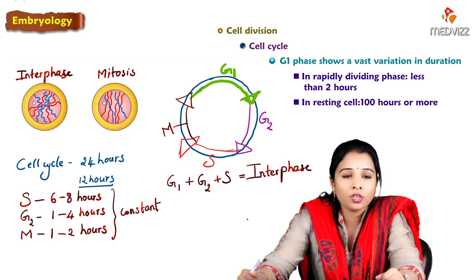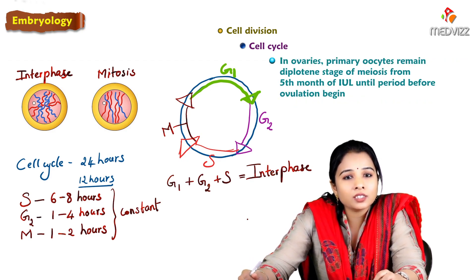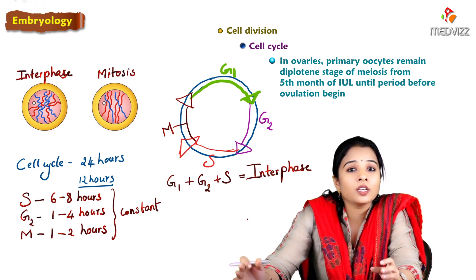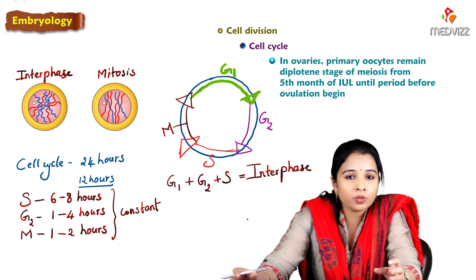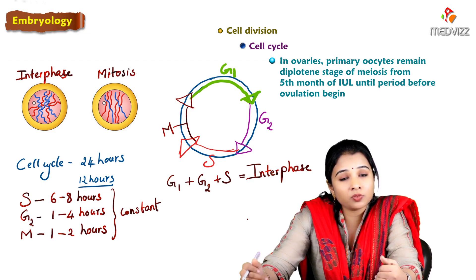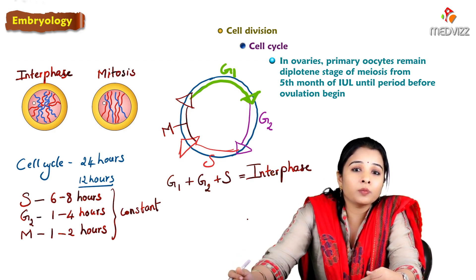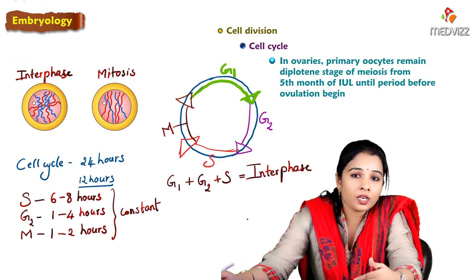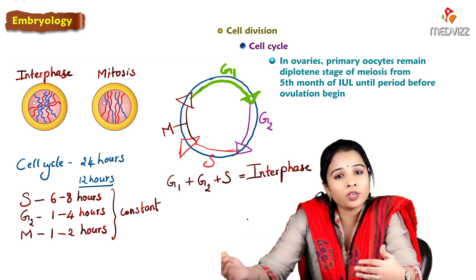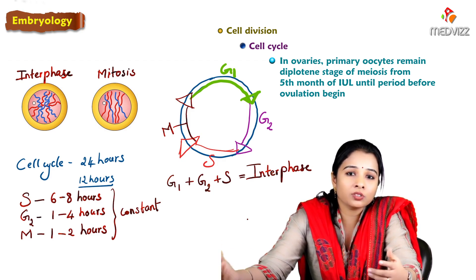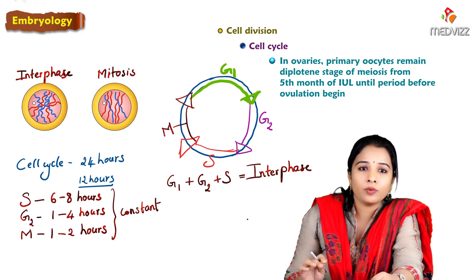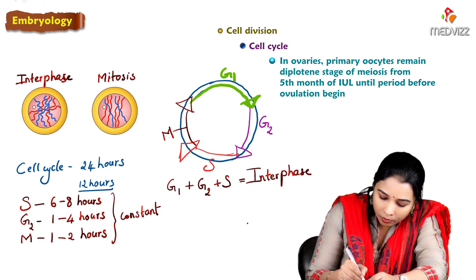For example, in the ovaries there are cells called primary oocytes, which remain arrested in the diplotene stage of meiosis from the 5th month of gestation until just before ovulation — that is, until the woman attains menarche. After ovulation, the primary oocyte completes meiosis and enters further phases to form daughter cells. This illustrates the unique variability of the G1 phase.